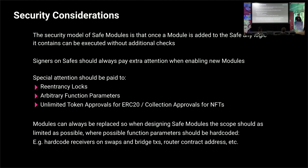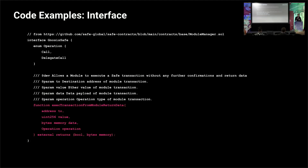Here's an overview of modules at a code level — it's super straightforward. This is the interface of the Gnosis Safe contract. You can find it at module-manager.sol. This is the function that the module will call. It can only be called by an enabled module — it will verify that the message sender is an enabled module. You pass it a 'to' address (the target contract you want to call out of the Safe), some amount of ETH for payable functions, the call data for the external contract, and the operation. Operation can be a call or delegate call — modules support delegate calls as well.